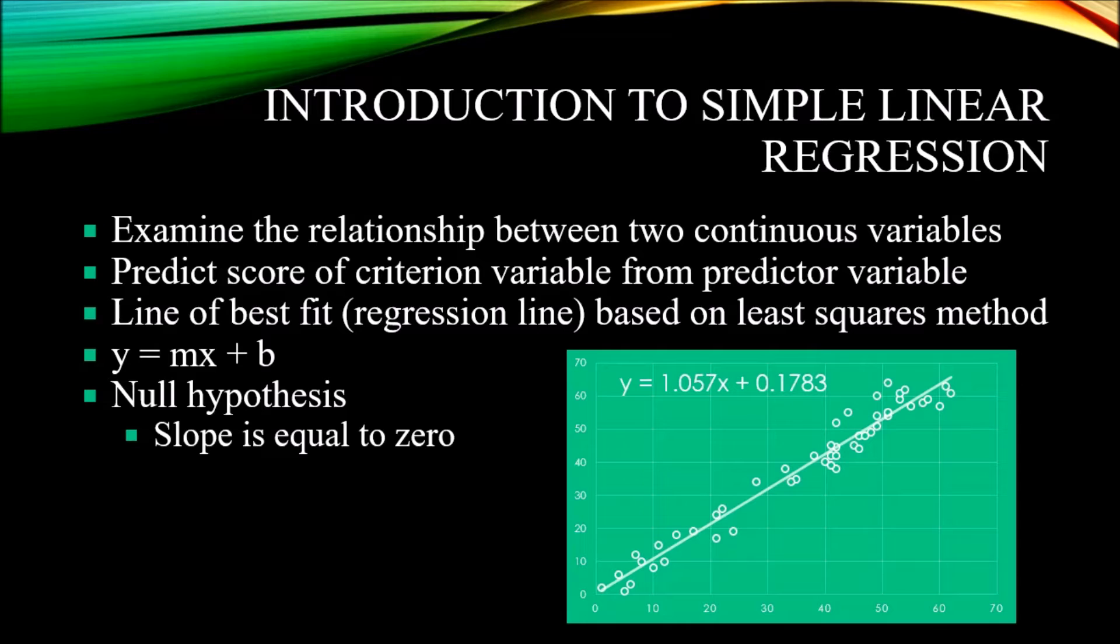later on those students will take some sort of comprehensive examination. And we have a continuous score for this assignment. Let's say it's between 0 and 100. And we have a similar type score for the comprehensive exam.